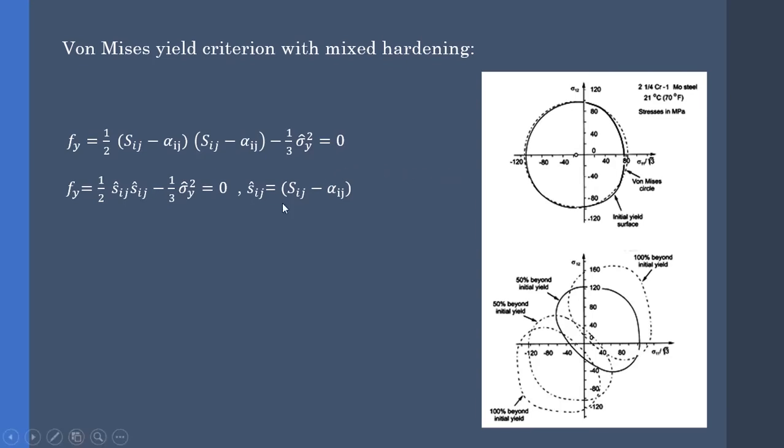Furthermore, S is the deviatoric stress tensor and alpha is called the back stress. Sigma hat controls the shape of the yield surface, while the alpha locates its center.